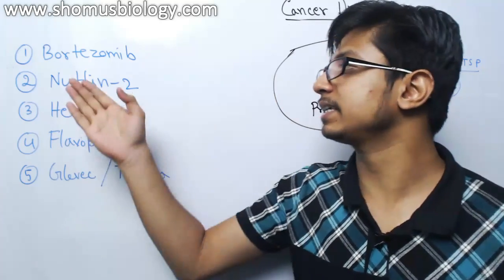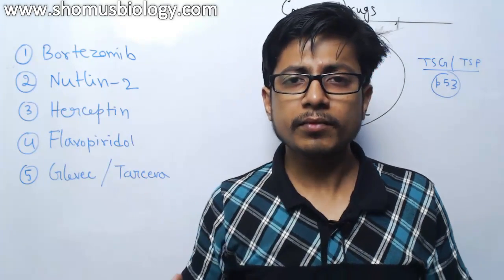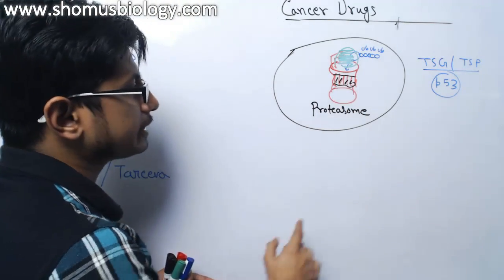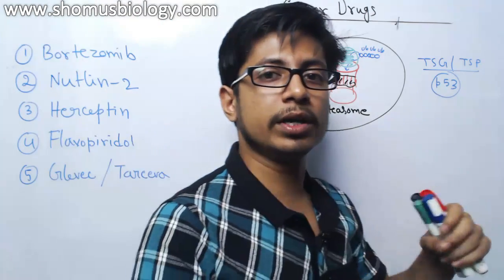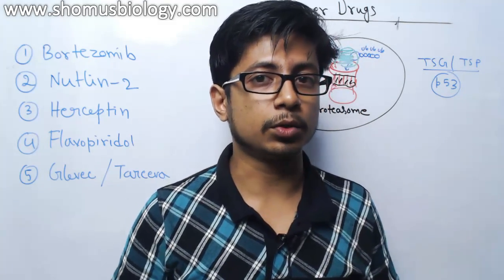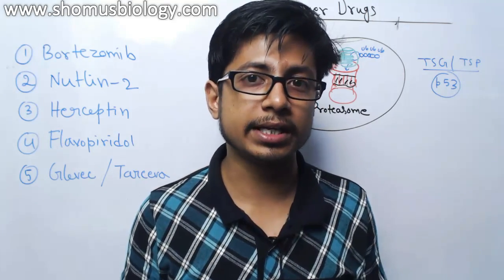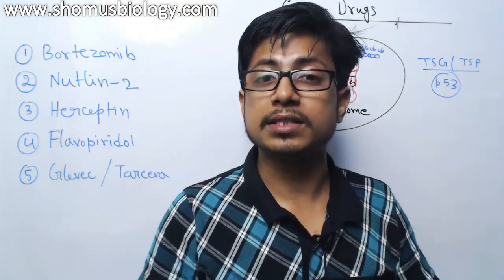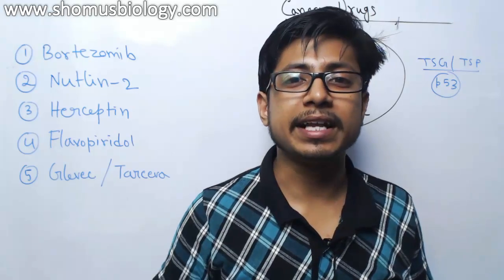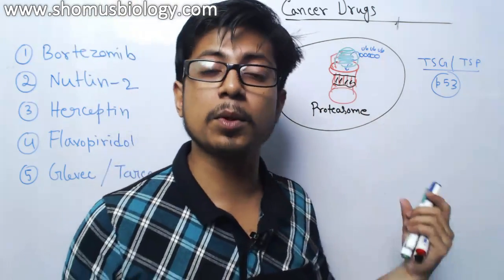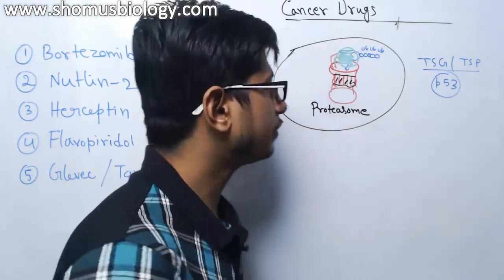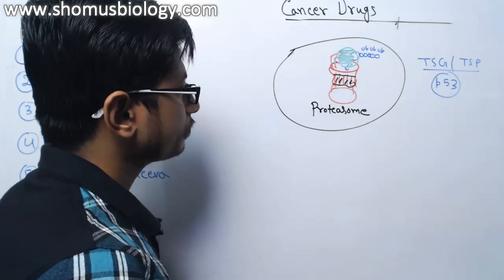The next type of drug is Nutlin-2, which is used to prevent the p53-MDM2 interaction. As mentioned, p53 plays a vital role as a cellular guardian during the cell cycle. It decides when a cell will continue to grow or stop. If there is any DNA damage or stress, p53 blocks the cell cycle through cell cycle arrest and recruits DNA damage repair proteins. If repair fails, p53 activates the apoptosis pathway to kill the cell.